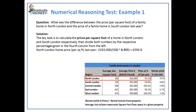Here we calculate the North London home prices per square foot for last year: 263,000 pounds divided by 500, times 0.955, which equals 550.80 pounds.